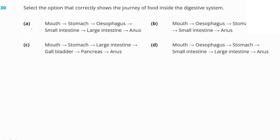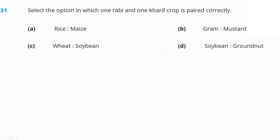Select the option that correctly shows the journey of food through the digestive system. Food moves from the mouth to the esophagus, then to the stomach, then the small intestine, then the large intestine, and finally the anus. Option B is our right answer.